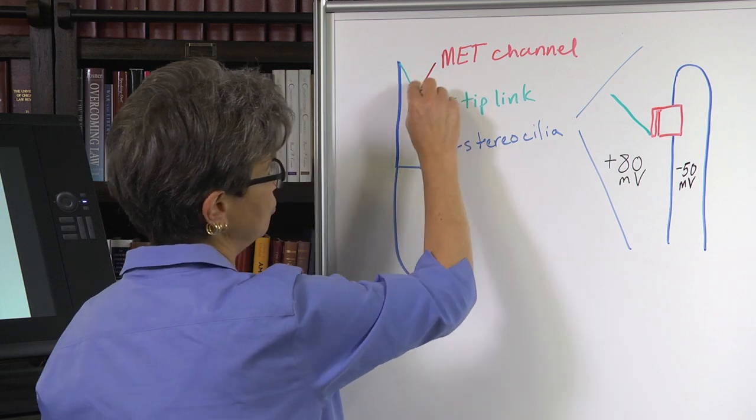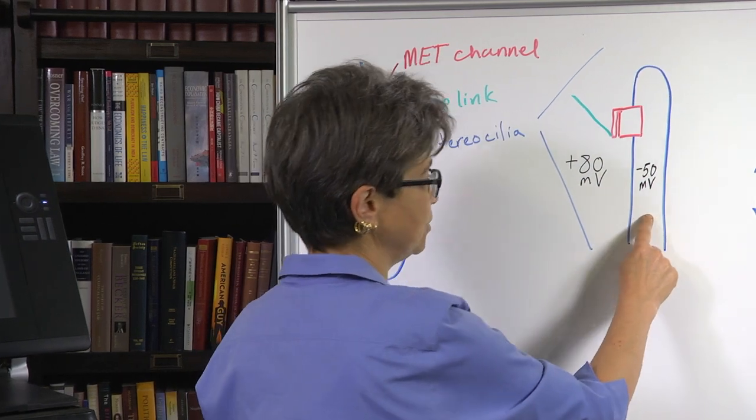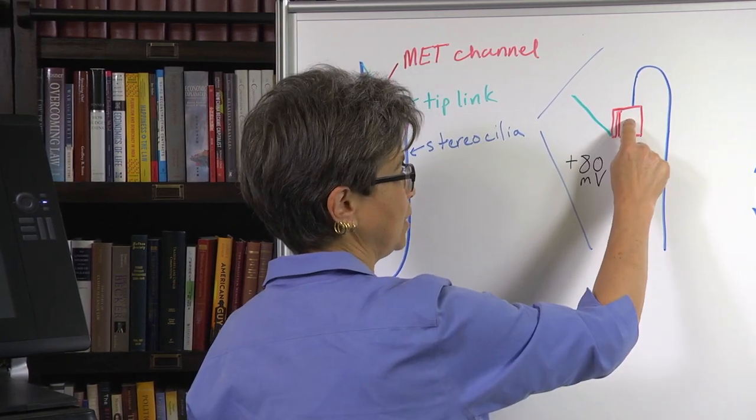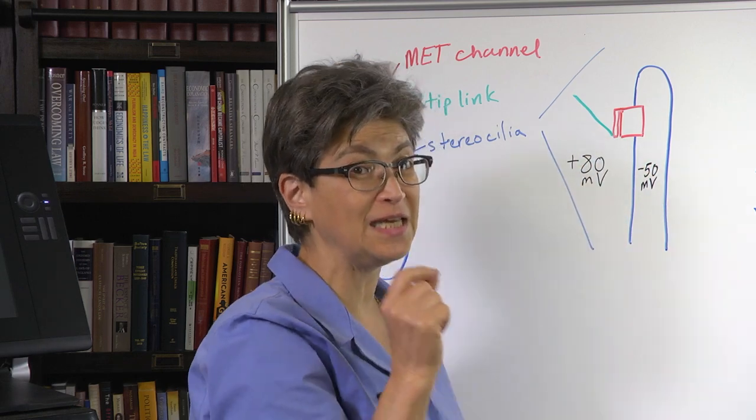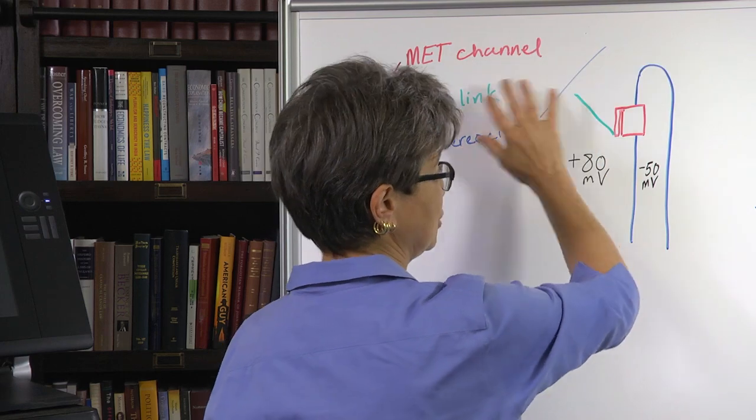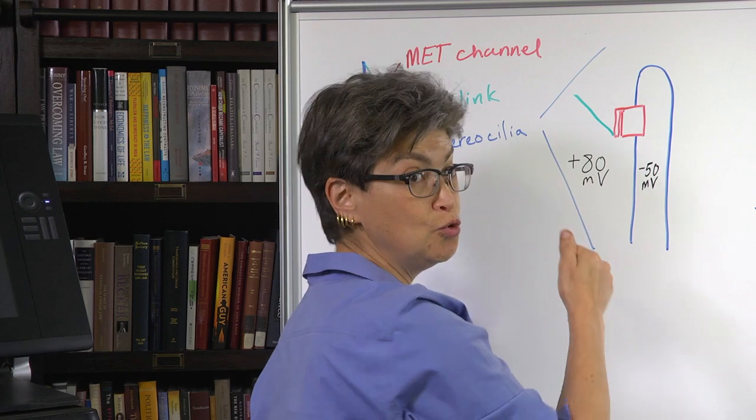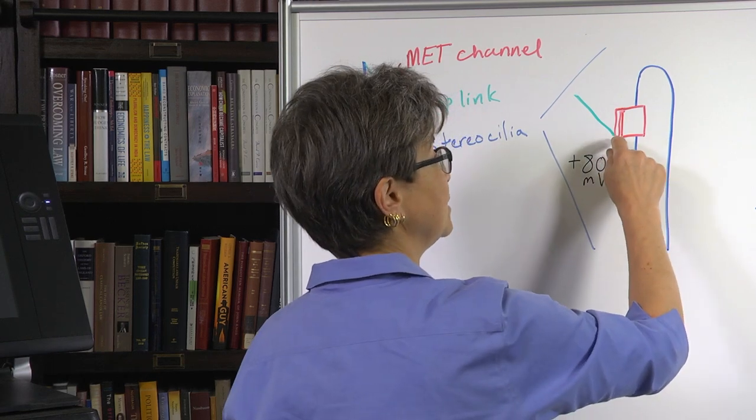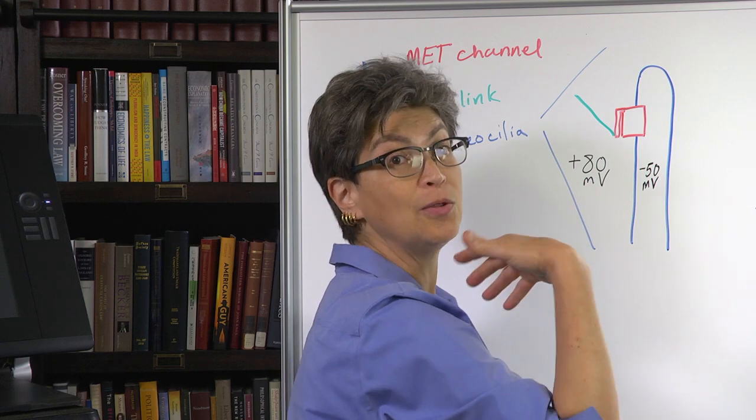If we blow just this little part up, what we see is right here: here's the stereocilia, here's the MET channel, and the tip link is physically attached to the MET channel. So when this stretches, when the bundle is moved, this door opens and now the MET channel, ions can flow through the MET channel.